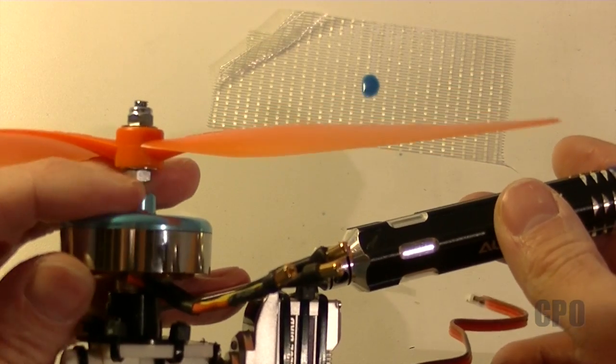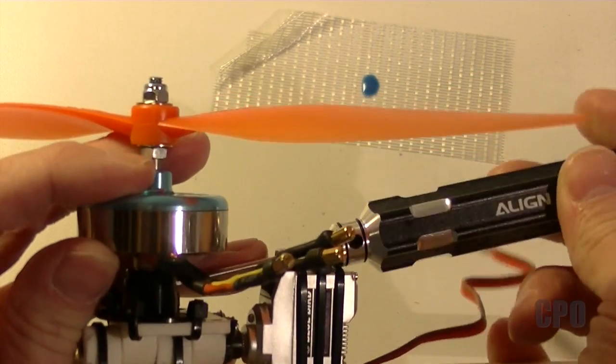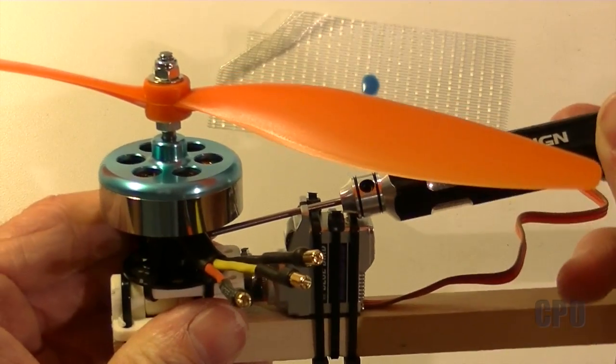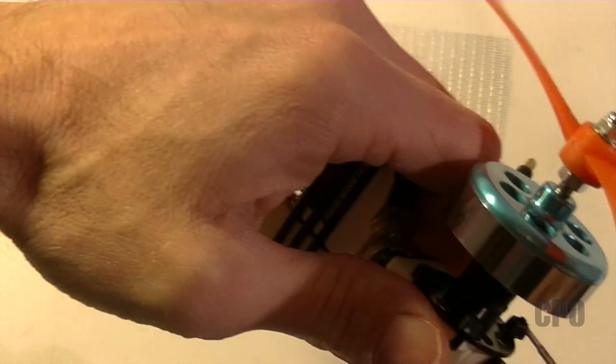Which is going to make it really tough to get your hex driver in. I was able to get it done. But next time I do this I'm going to make sure that the grub screws are pointed out to the sides, not back towards the servo.